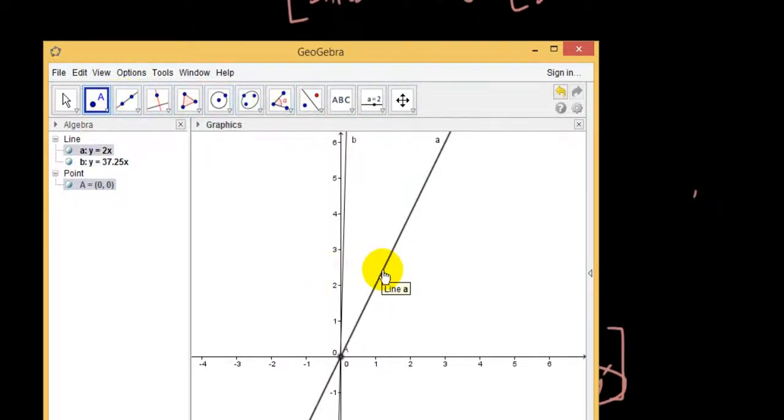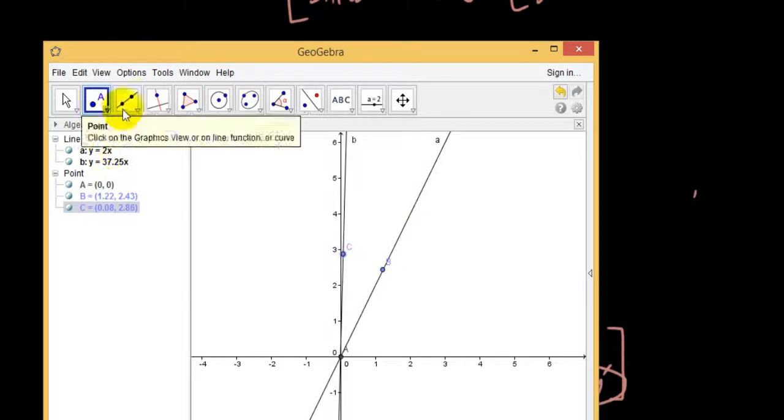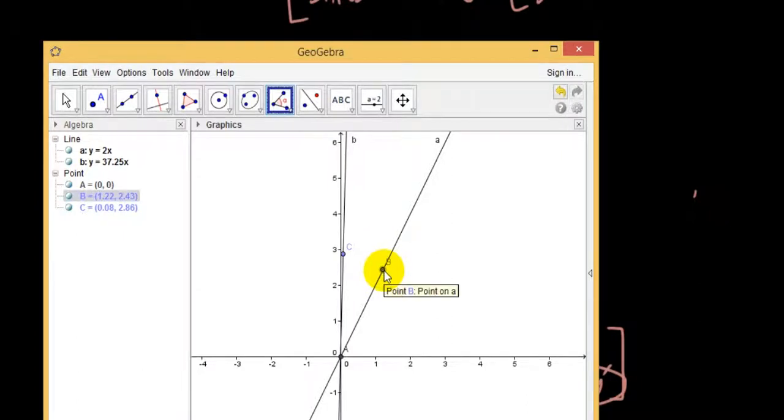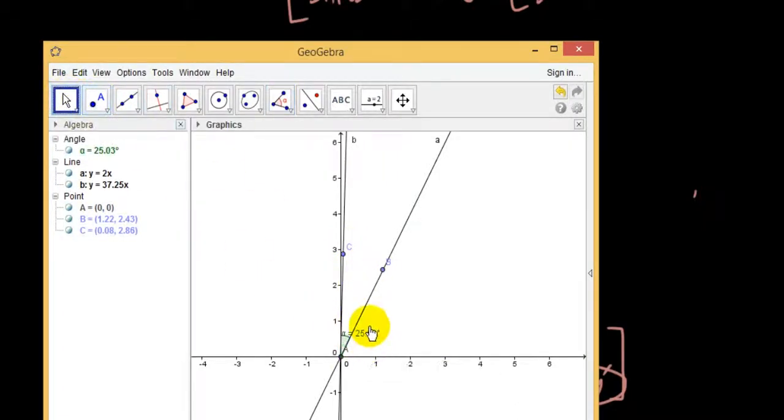Actually, let's just draw another 2 points on these 2 lines, so I can get the angle a little bit easier. So angle between point B, point A, and point C. And yes, the angle is 25 degrees.